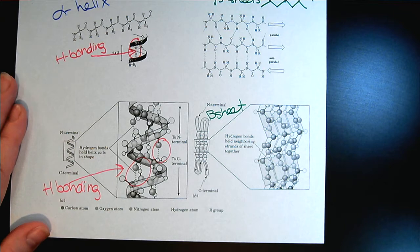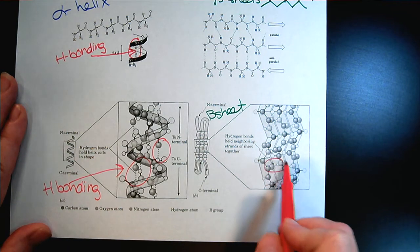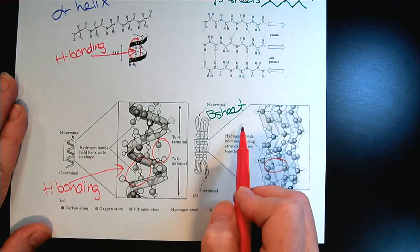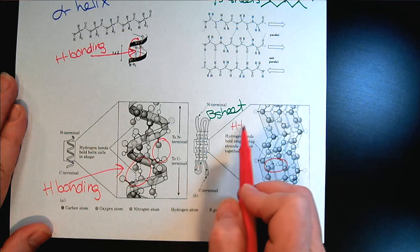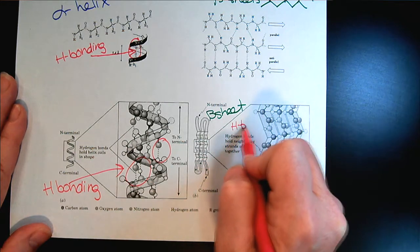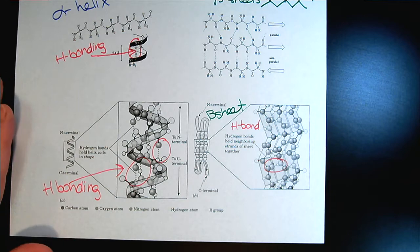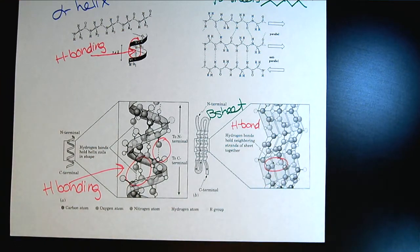That reflection of light is a consequence of the secondary structure of the proteins that create silk and spider webs. That's what makes them so sparkly, is that the beta sheets are reflecting the light. Once again, in here, we can see that we have the H bonding between the neighboring amino acids.